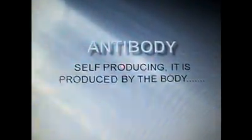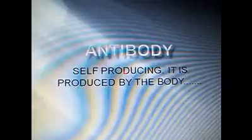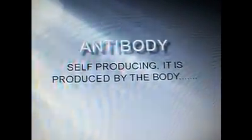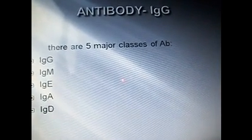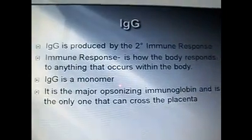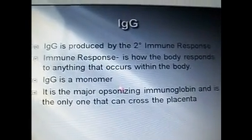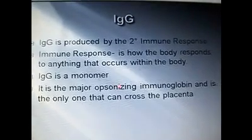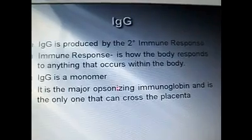Hello, I'll be doing a lesson on antibodies. Antibodies are produced by the body. There are five major classes of antibodies: IgG, IgM, IgE, IgA, and IgD. IgG will be my main focus. IgG is produced by the secondary immune response, which is how the body responds to anything that occurs within the body.